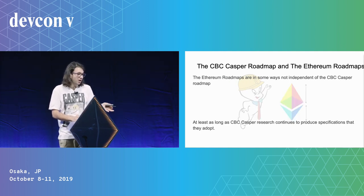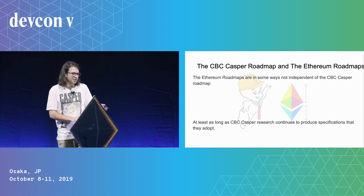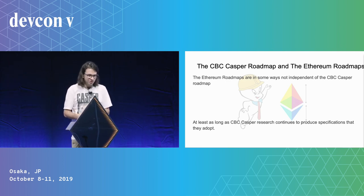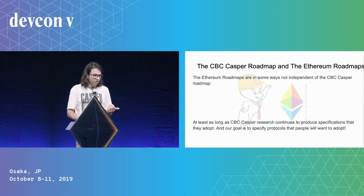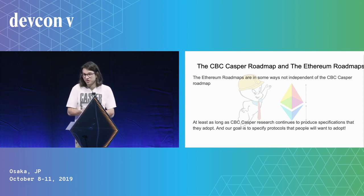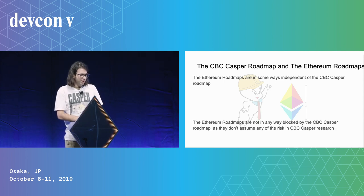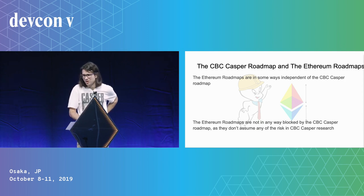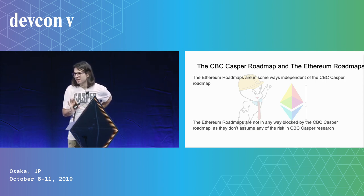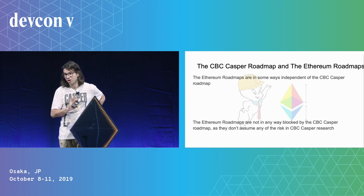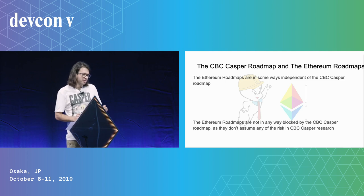In some ways the Ethereum roadmaps are not fully independent of the CBC-Casper roadmap, at least as long as we continue to produce things they want to implement. Our goal is to build protocols that people really want to implement because of their simplicity, elegance, utility, and properties. That said, the Ethereum roadmaps are not blocked on the CBC-Casper roadmap — no one is waiting for us to finish our research before implementing protocols. They really are in some ways very independent of us.